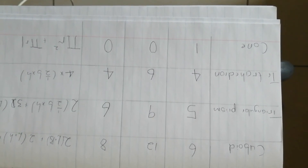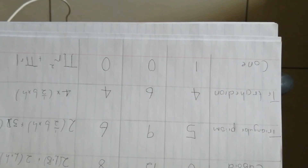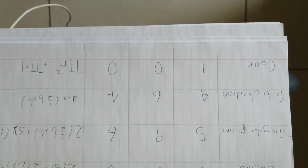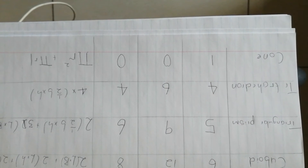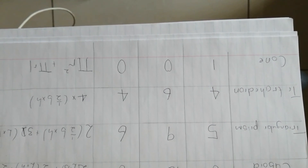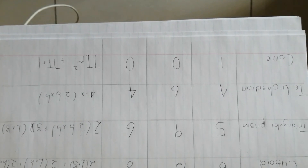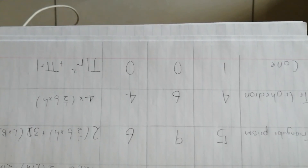For the cone, I found the area of a circle, which is πr², plus the area of the curved surface, which is πrl, where l is the slanted height.